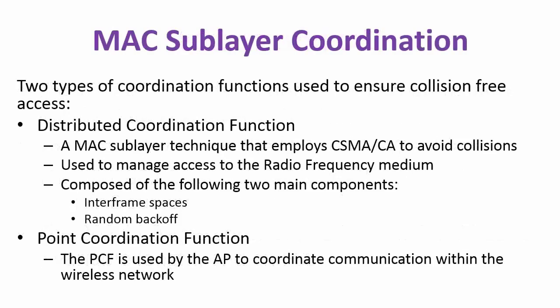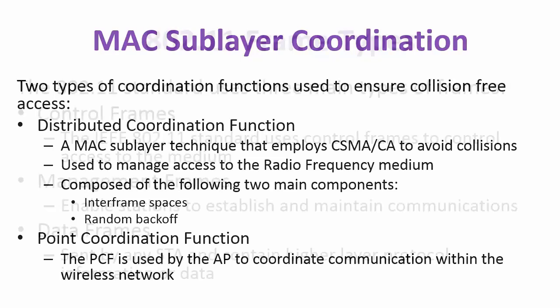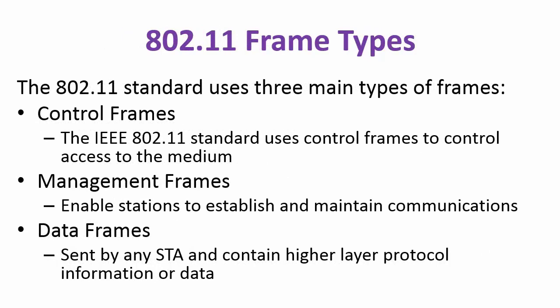There are two types of coordinated functions used to ensure collision-free access on a wireless network. First, distributed coordination function — the MAC sublayer technique employs CSMA/CA to avoid collisions, used to manage access to the radio frequency medium, composed of inter-frame spaces and random back-off. Second, point coordination function, where the PCF is used by the AP to coordinate communications with the wireless network.